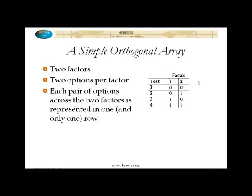It's guaranteed to be represented in the orthogonal array. That's one of the essential mathematical properties of an orthogonal array. So if you're dealing with a true orthogonal array, it'll have that property. If you're dealing with a table that has a situation where there's a pair of options that you can identify across two factors and they're not in that table, it's not an orthogonal array.